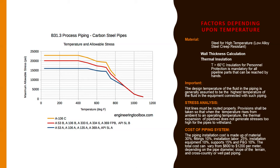Factors depending upon temperature include: alloy steel for high temperature, low alloy steel for creep resistance, wall thickness calculation, and thermal insulation. The design temperature of the fluid and piping is generally assumed to be the highest temperature of the fluid in equipment connected to such piping. For stress analysis, hot lines must be routed properly; provisions shall be taken so that when temperature rises from ambient to operating temperature, thermal expansion of the pipeline does not generate stresses too high for the pipe.